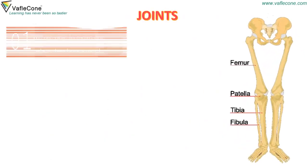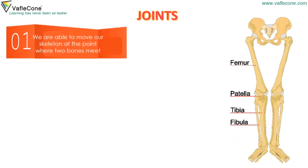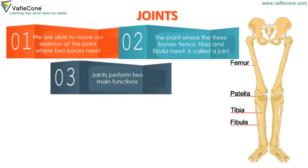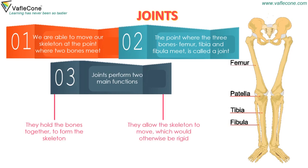Joints. We are able to move our skeleton at the point where two bones meet. The point where the three bones — femur, tibia and fibula — meet is called a joint. Joints perform two main functions: they hold the bones together to form the skeleton, and they allow the skeleton to move, which would otherwise be rigid.